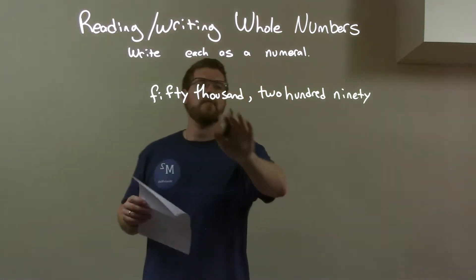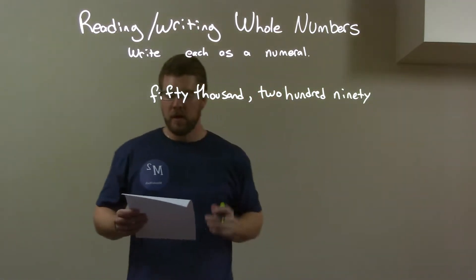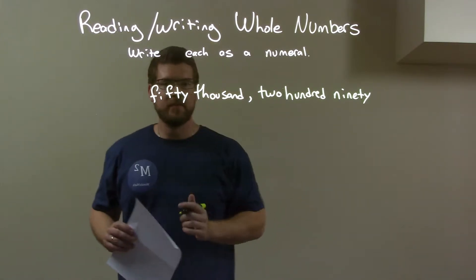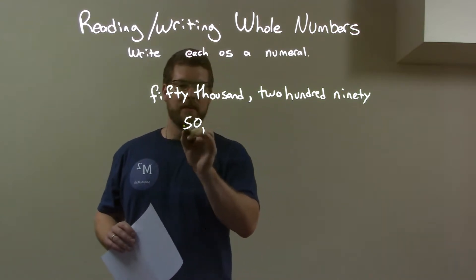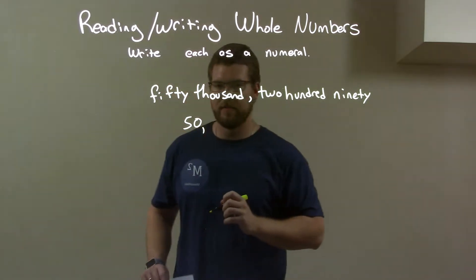So we have 50,290. Okay, so first 50,000. Well, I see 50, so 50, then the thousands place. So that's 50,000 by the three spaces afterwards.